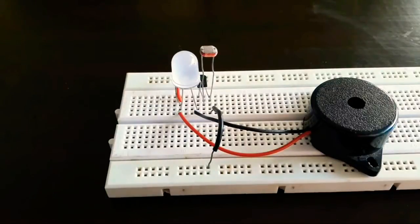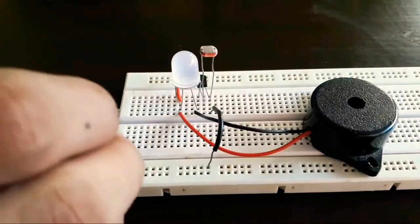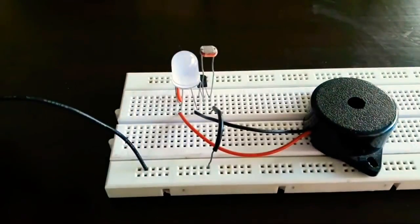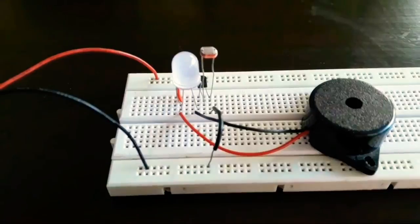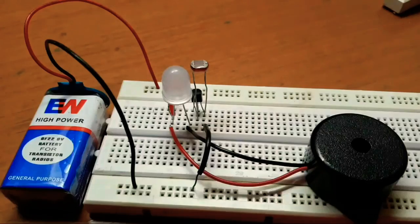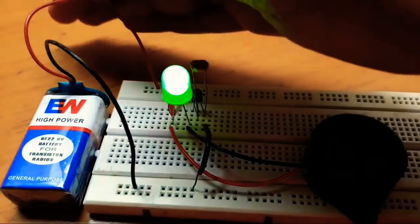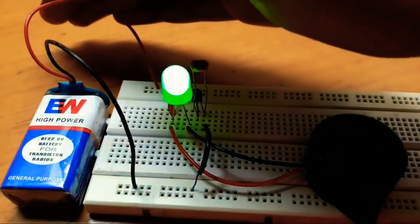Now connect the 9V battery. That's it, our circuit is ready. Let's test it now. As you can see this is a dark sensor too.